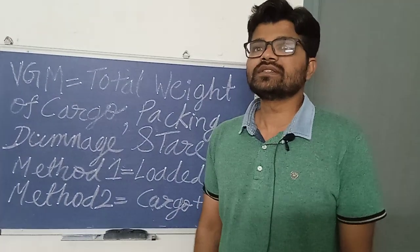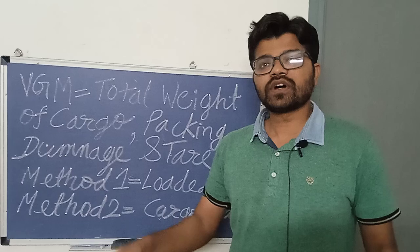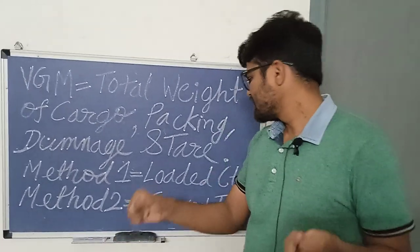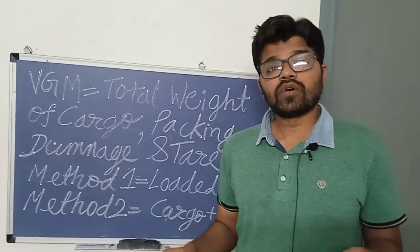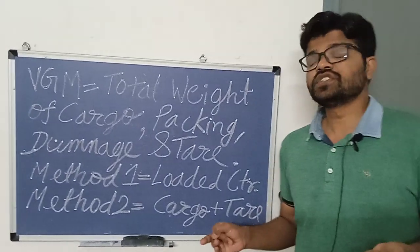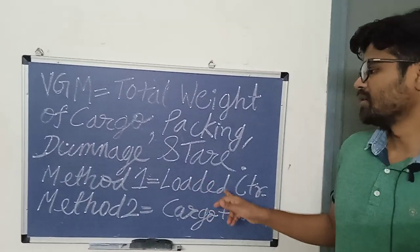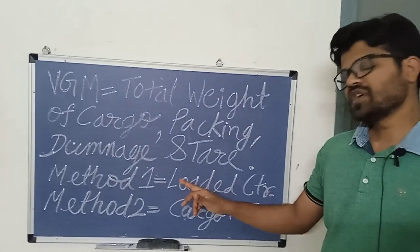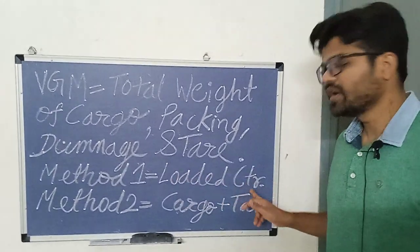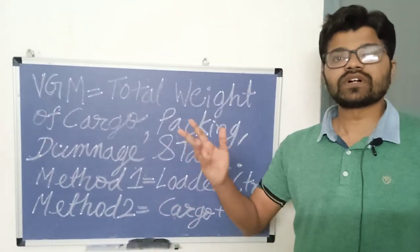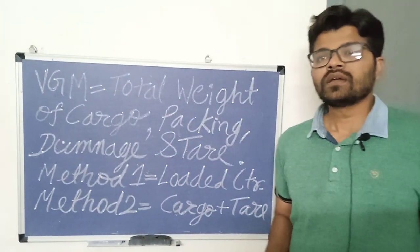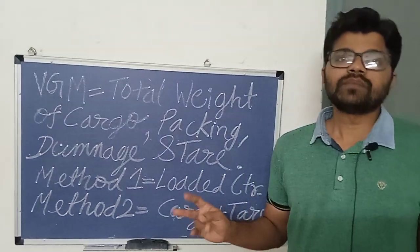Method 1 is when the weight of the container is directly measured for VGM. The VGM is identified by weighing the loaded container using measuring devices such as a metrological weighbridge or any VGM identification method.